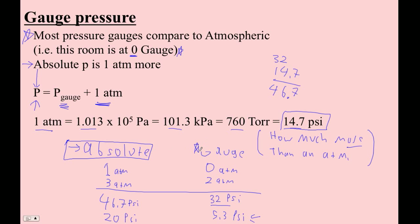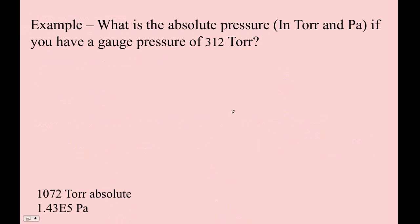Let's do an example here. So what's the absolute pressure in Torr and Pascal if you have a gauge pressure of 312 Torr? So what we're saying, when we say it's a gauge pressure of 312 Torr, it's 312 more than an atmosphere.